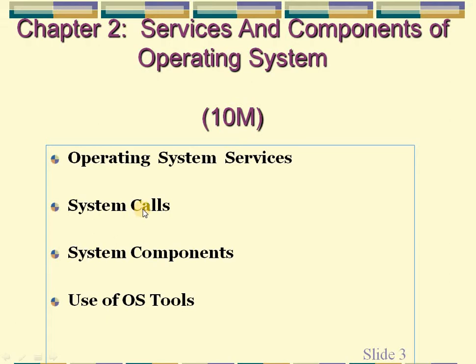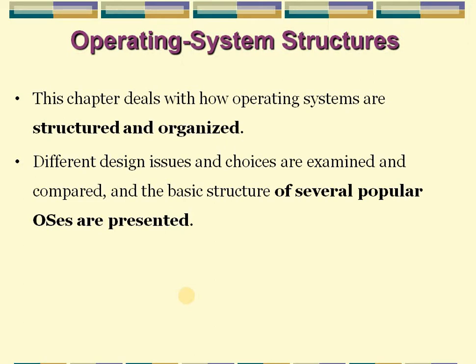We will also discuss what are the user views of system calls, what are the different system components provided by the operating system, and what is the use of operating system tools. Before starting the actual concepts, this chapter deals with how operating systems are structured and organized. Different design issues and choices are examined and compared, and the basic structure of several popular operating systems are presented — that means the structure of the operating system.